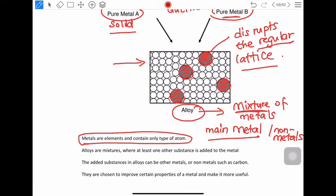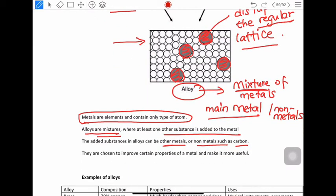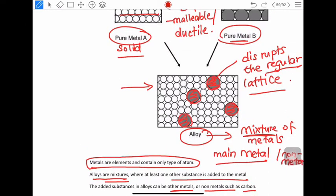Metals contain only one type of atom. Alloys are mixtures and will contain at least two different substances. The substances can be metals or non-metals such as carbon. Alloys have improved properties over metals.